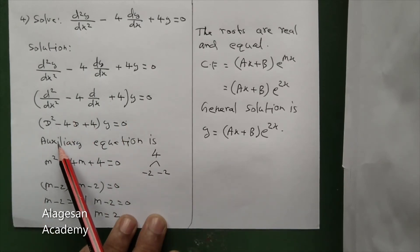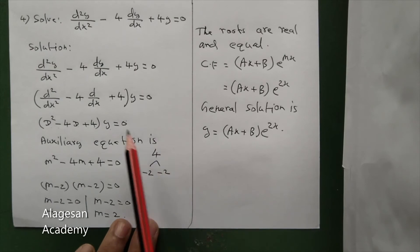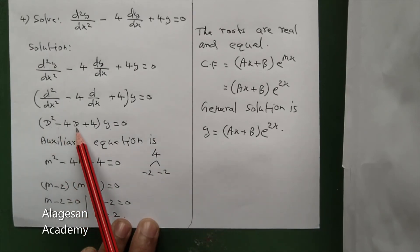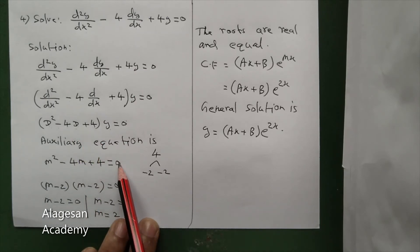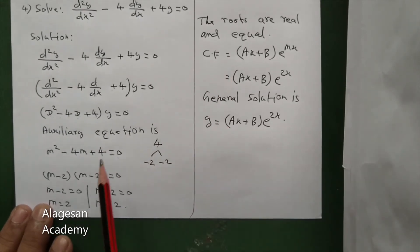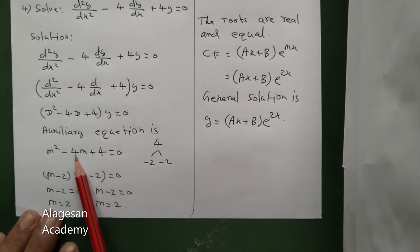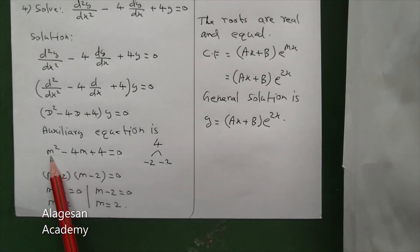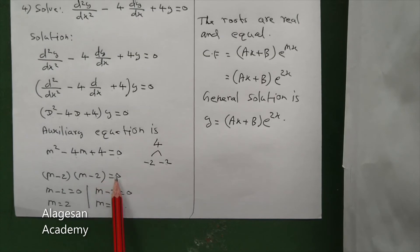Next we have to write the auxiliary equation. Replace D with m: m squared minus 4m plus 4 equal to 0. Now factorize: we need two numbers that multiply to 4 and add to minus 4 — that is minus 2 and minus 2. So factorizing: m minus 2 into m minus 2 equal to 0.